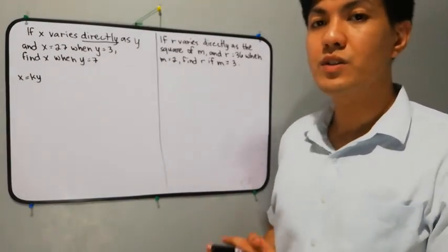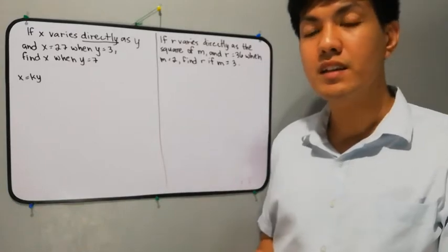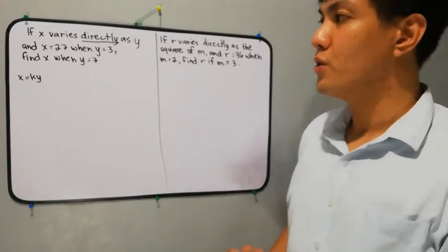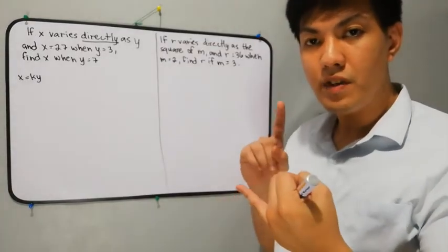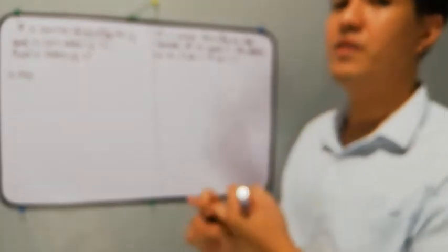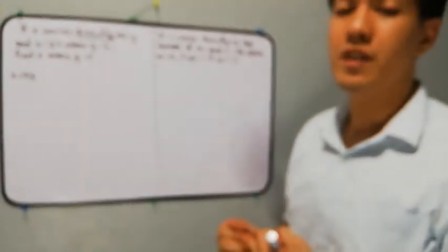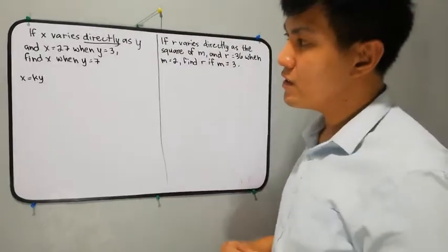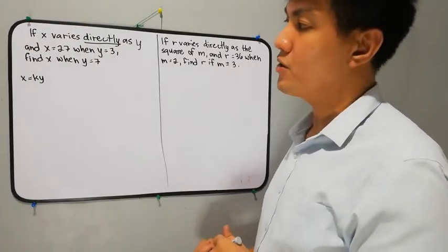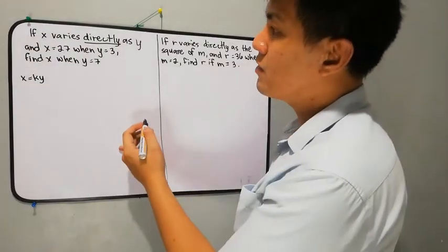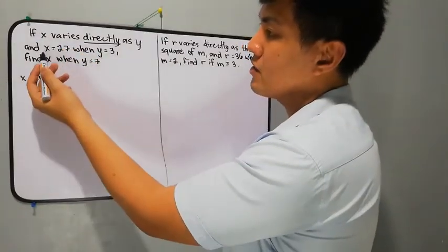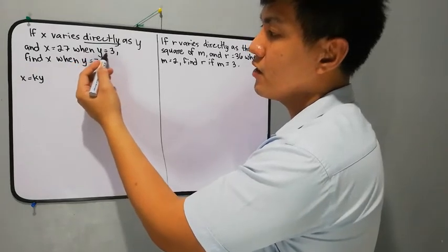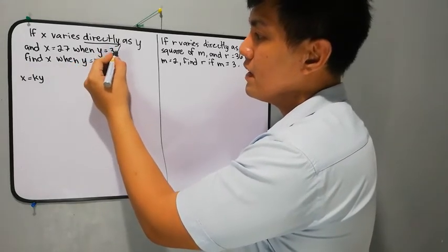The third step is to divide the statement into two parts. We have here two parts of solving: the first part is solving for the constant, and the second part is solving for the missing value of the variable. If we divide the statement into two, the first part will be: 'if x varies directly as y and x is equal to 27 when y is equal to 3.' So this will be the first part.